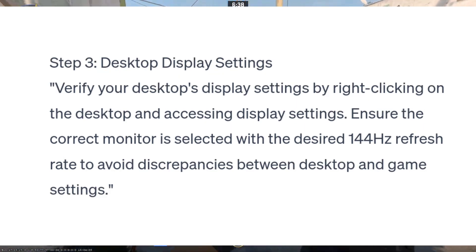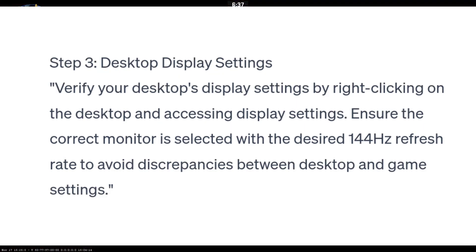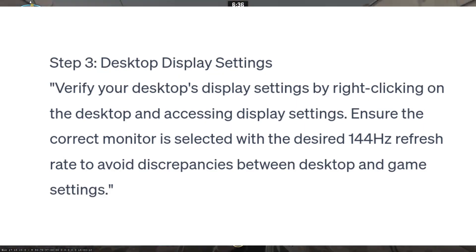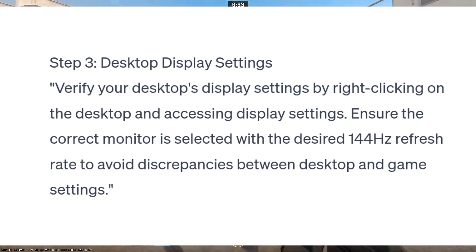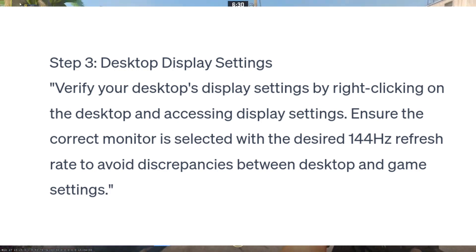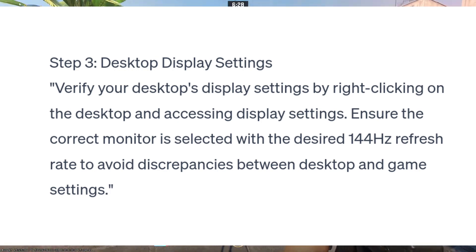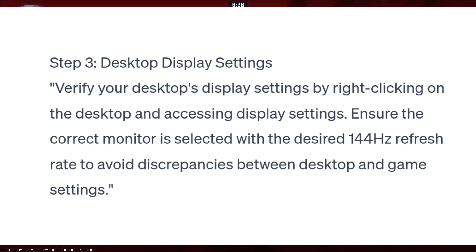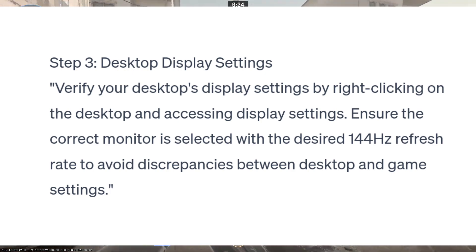Step 3: Desktop Display Settings. Verify your desktop's display settings by right-clicking on the desktop and accessing display settings. Ensure the correct monitor is selected with the desired 144Hz refresh rate to avoid discrepancies between desktop and game settings.